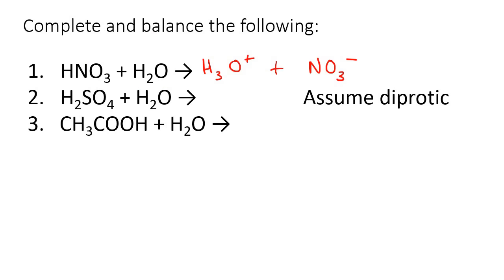For number two, I'm saying diprotic. Now diprotic means that it gives away two protons. So it's going to give away both of these protons. So that means we're going to end up with H3O plus SO4 minus 2, because you're giving away two protons, and so your charge will become negative 2.